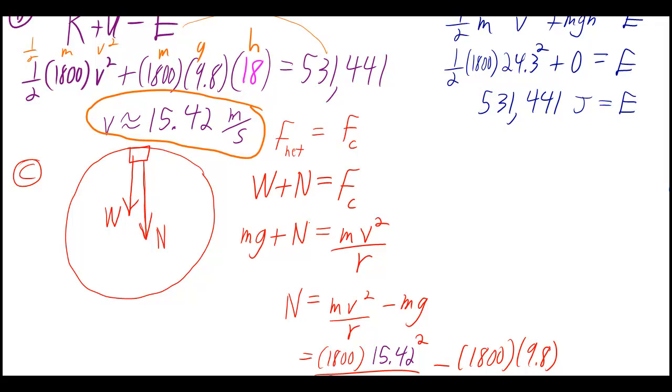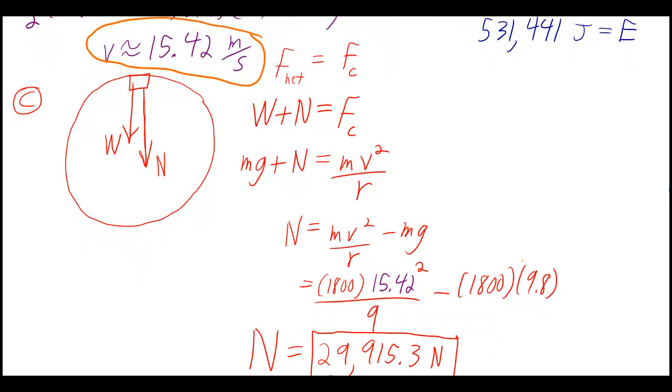And we're looking for the normal force, so we want to solve this for N. Or we could have just plugged in and then solved it for N later. I solved it for N first. And then I plugged in. And I had to use the v that we figured out in part B. We just figured out the speed at the top of the loop, so that's 15.42. And when you finally plug in everything, you'll get 29,915.3 newtons.